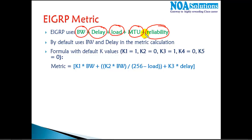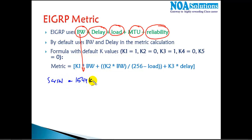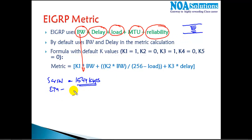These are the five factors EIGRP uses to decide the best route. Let's look at their default values. Starting with bandwidth: the default bandwidth on a serial link is 1544 kbps. Bandwidth defines how many bits per second you can send — the wider the link, the more bandwidth you have and the more information you can send at one time.